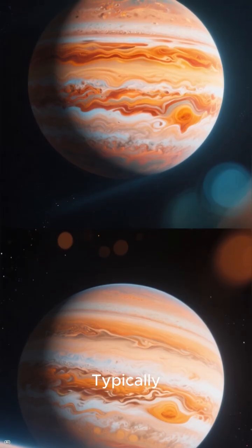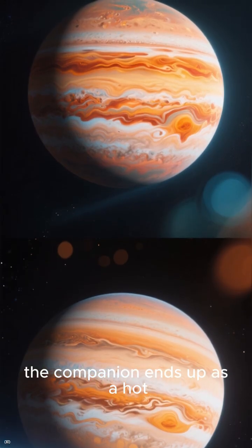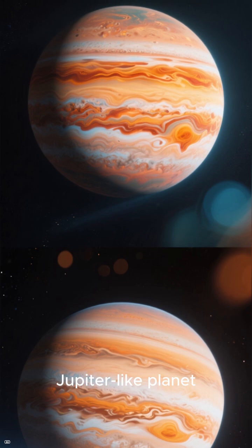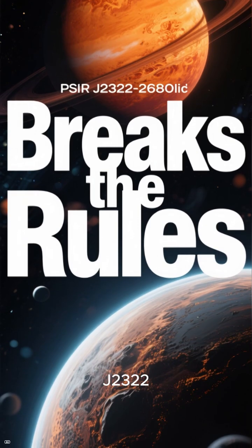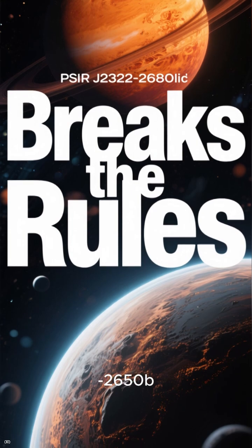Typically, the companion ends up as a hot Jupiter-like planet made mostly of helium. But this planet, PSR J-322650B, breaks the rules.